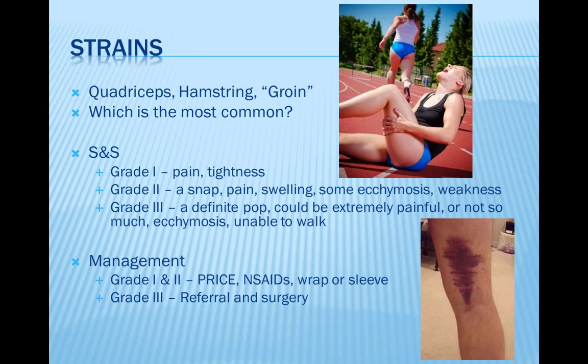Muscle pulls are strains — or in severe cases, tears — of the muscle fiber and/or tendon. According to the American Academy of Orthopaedic Surgeons, the thigh muscle is the most common place for a strain or tear to occur. Common areas include the quadriceps, hamstring, and groin muscle groups, with hamstring strains being most common. Signs include sudden, severe pain during exercise, a snapping or popping feeling, pain in the back of the thigh, lower buttock, or front of the thigh when walking or bending, and tenderness or bruising. For a grade one or two strain, PRICE, NSAIDs, and a wrap or sleeve are proper management. A grade three strain requires referral to a physician and will most likely require surgery.